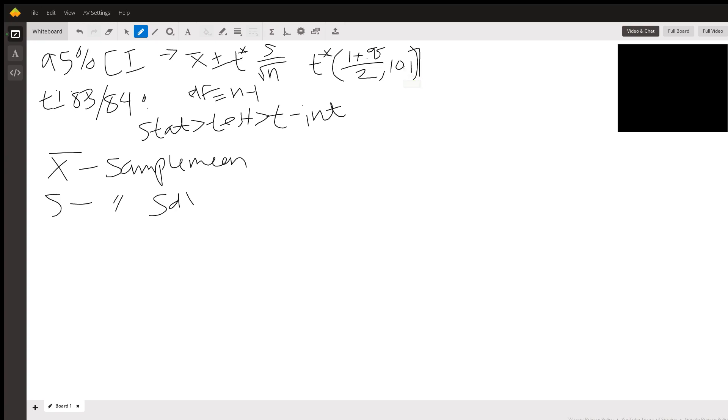t star is found - you can find this either in a table or if you have an online calculator. Some people use RStudio. There are a lot of different ways to find this value. They're all going to be the same no matter what method you use.